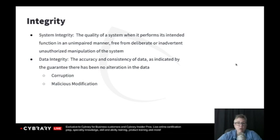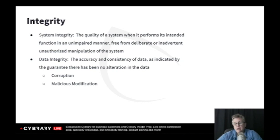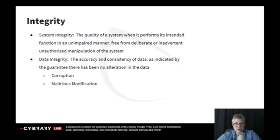Integrity means I want a guarantee, I want an assurance that my information hasn't been modified, or my file hasn't been modified. That can happen accidentally through corruption, or it can be malicious. If I'm looking to protect against accidental modification or corruption, then I'll use a hash. If I'm looking to protect against malicious modification, I'm going to use a digital signature.